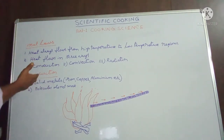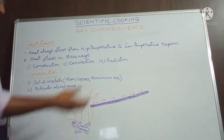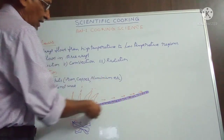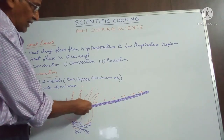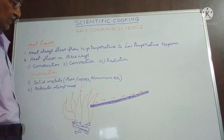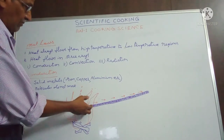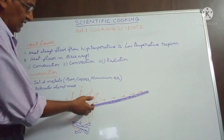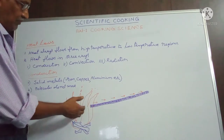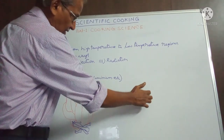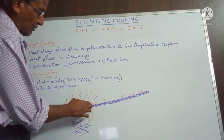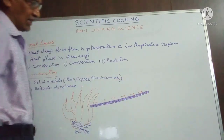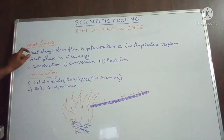Let us know about the first law. If we put an iron rod in a flame, heat flows from high temperature to low temperature regions. Here, at one end of this rod it is having high temperature, and at the other end it is having low temperature. Heat flows from this high temperature region to the low temperature region. This is the first law.